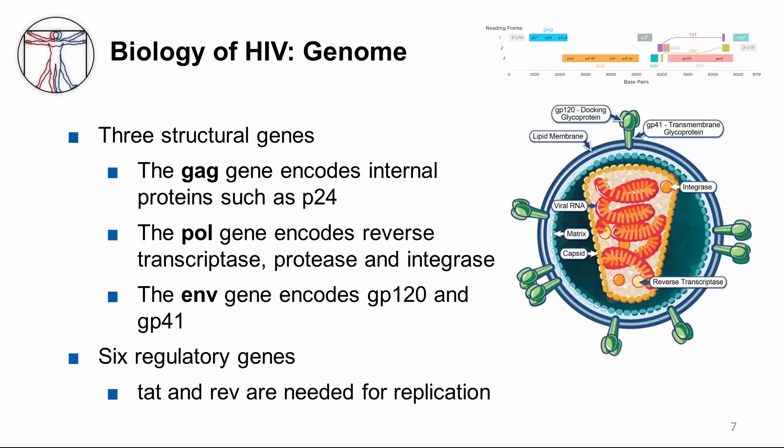The HIV genome has three structural genes — GAG, POL, and ENV — typical of retroviruses, and six regulatory genes. The GAG gene encodes the internal core proteins such as P24 protein. P24 is important because it is the antigen used in the initial HIV serologic tests to determine whether someone is HIV infected. POL encodes reverse transcriptase, which is important for transcribing RNA into DNA. POL also encodes integrase, which integrates viral DNA into host DNA, and protease, which cleaves viral precursor proteins before the virus leaves the cell.